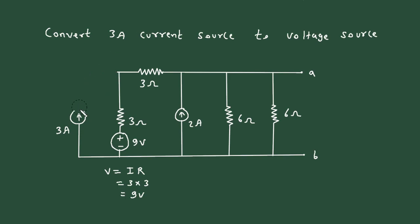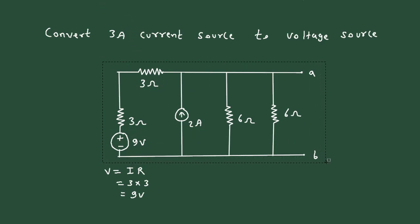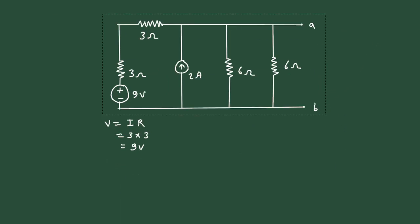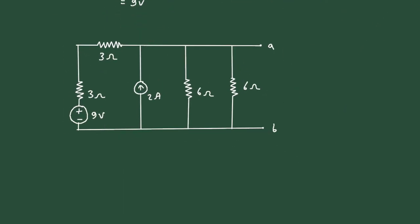Now we will erase this current source. Here we can clearly see this 3 ohm and this 3 ohm are connected in series. So it will be 3 ohm plus 3 ohm, which will be 6 ohm. We will erase this and it will be 6 ohm.